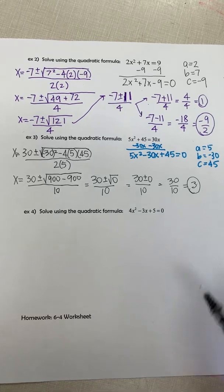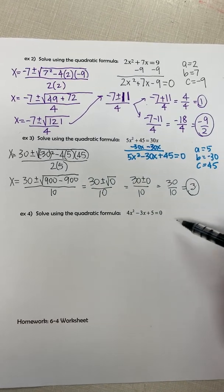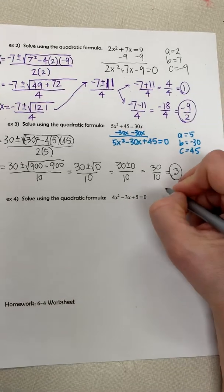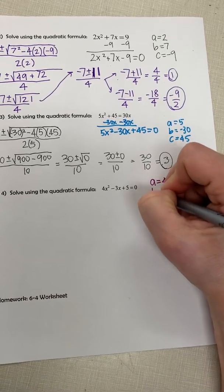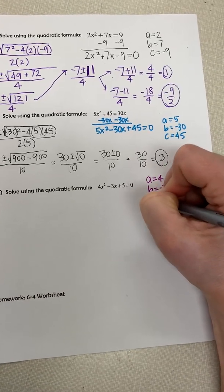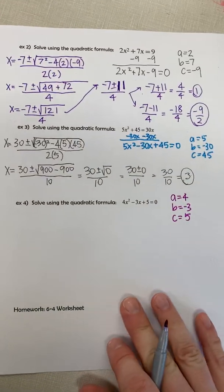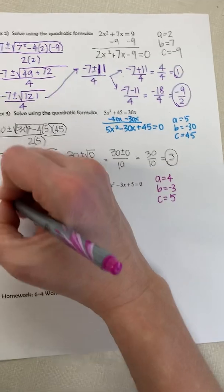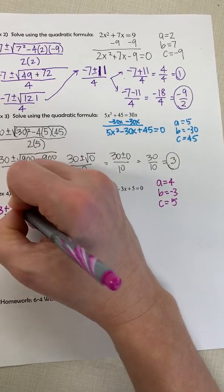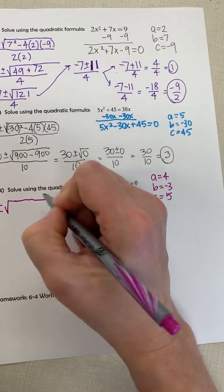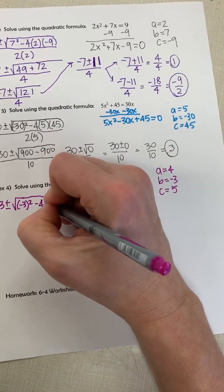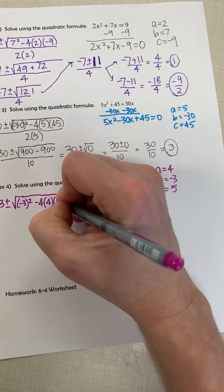And then finally, this one already equals 0, so we're ready to set it up. And so we're going to put all that into the quadratic formula. Opposite of B, so positive 3, plus or minus square root of B squared minus 4 times A times C.